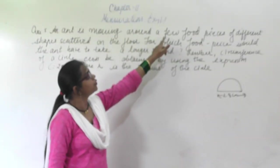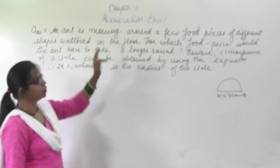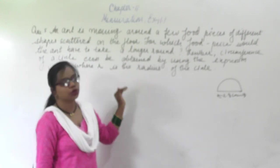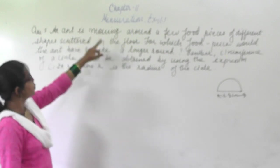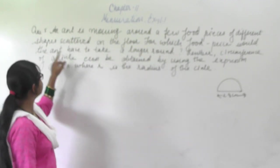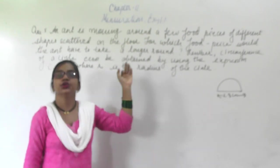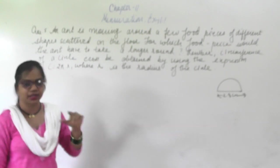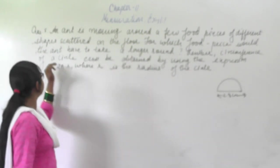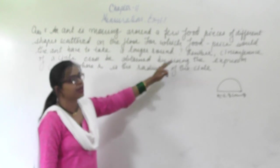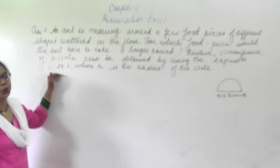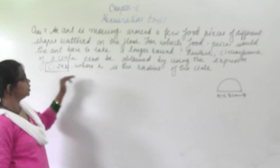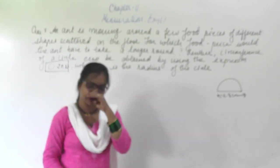The ant is moving around a few food pieces of different shapes scattered on the floor. There are different shapes given in the figure in which the ant is moving around. For which food piece would the ant take a longer round? The circumference of the circle can be obtained using the expression C equals 2 pi r, where r is the radius of the circle.